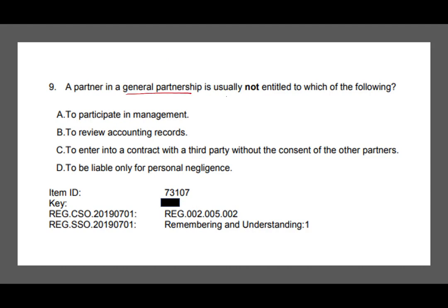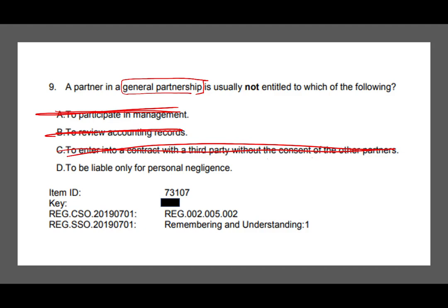Question: a partner in a general partnership is usually not entitled to which of the following? A — to participate in management? No, you're a general partner, you are the manager. B — to review accounting records? If you're managing, you review records. C — to enter contracts with third parties without consent of other partners? You can do that as a general partner. By process of elimination, D is the answer: to be liable only for personal negligence. As a general partner, you are liable for everyone's negligence, not just your own. You don't have that protection.